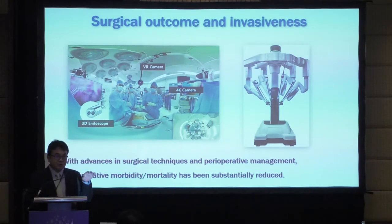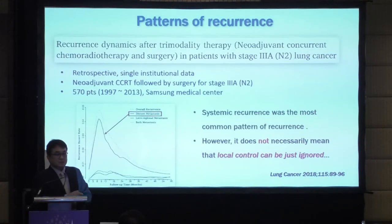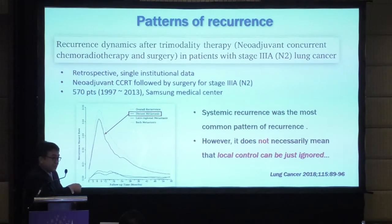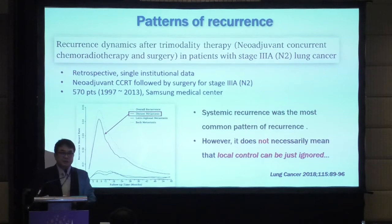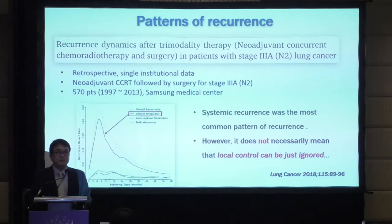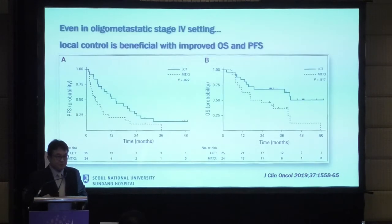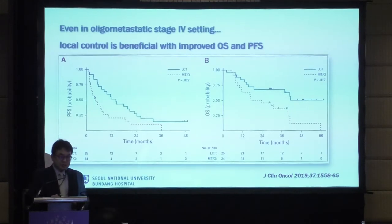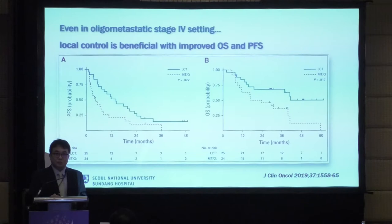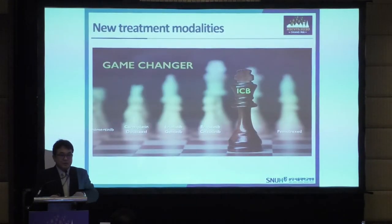Regarding patterns of recurrence from Samsung Medical Center data: most failures are distant metastasis, but many cases still show local recurrence, meaning we still have a role in controlling local disease. Even in oligometastasis stage 4 settings, local recurrence cases are significant. So the role of local control and the role of surgery is still important.